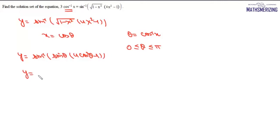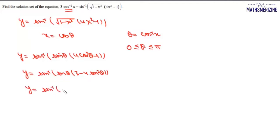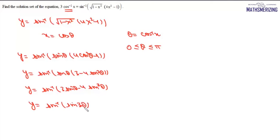We can write this as y = sin⁻¹(sin θ · (3 - 4sin²θ)) = sin⁻¹(3·sin θ - 4·sin³θ), which is nothing but sin⁻¹(sin 3θ), using the triple angle identity.